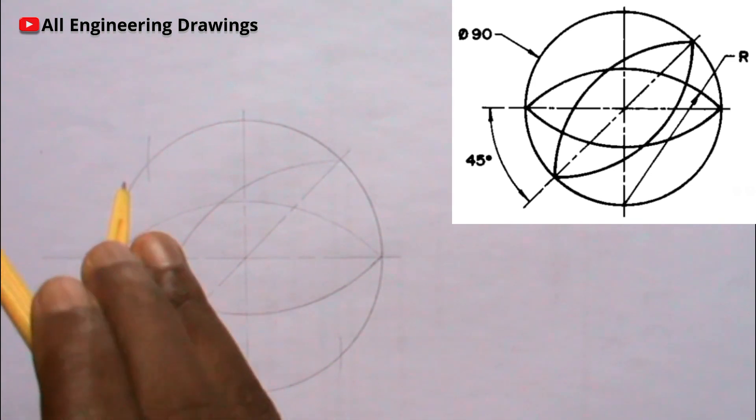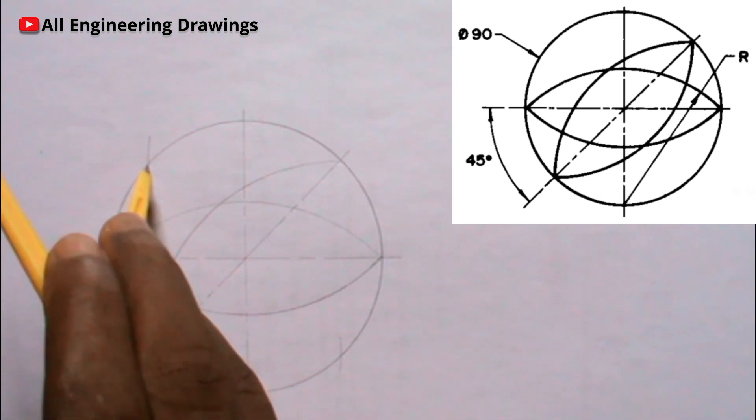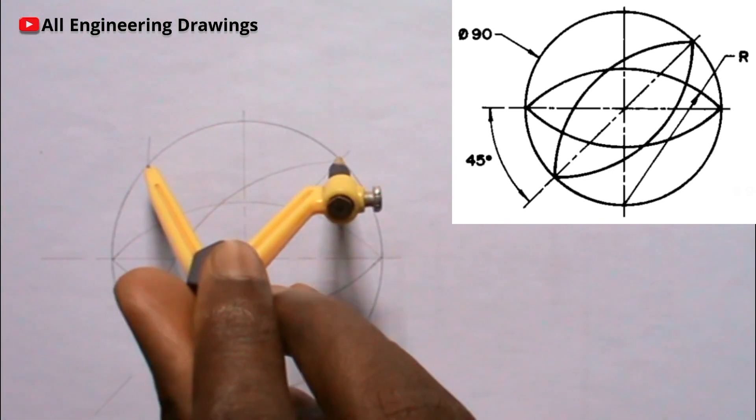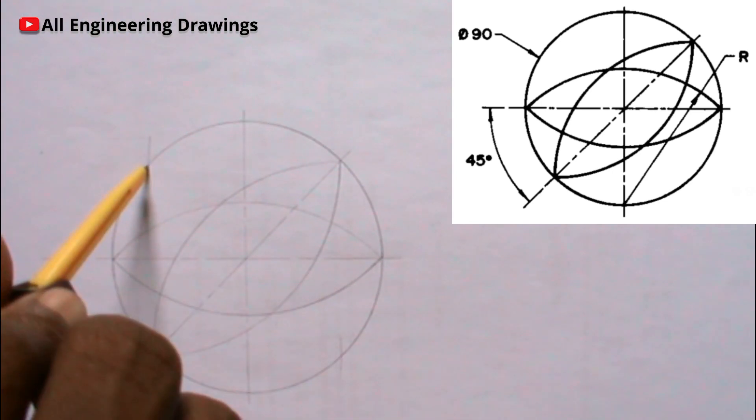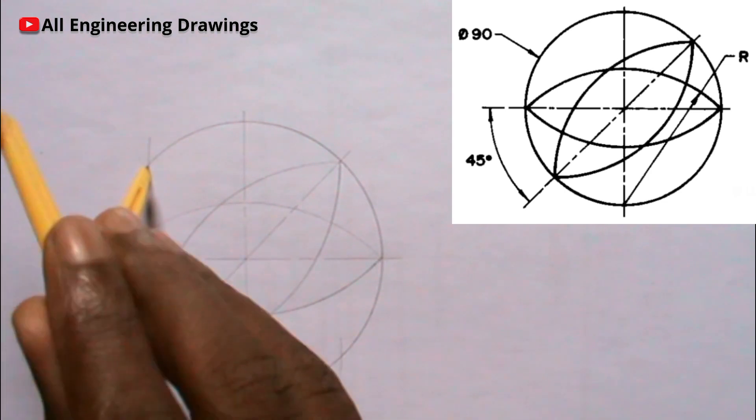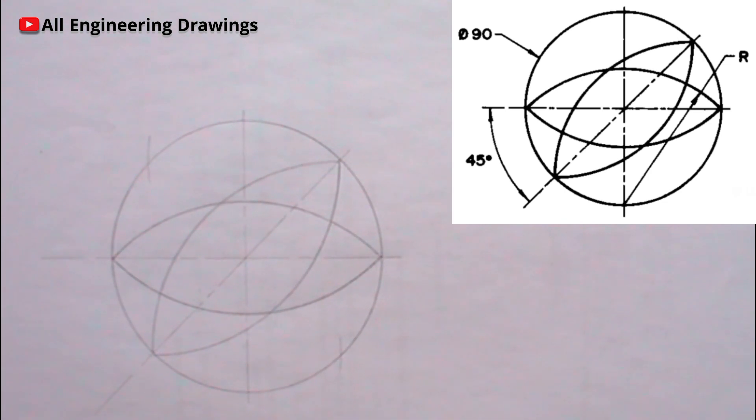Also place your compass at the point where this one intersects. Then you can now draw the second arc. So now we dimension the drawing.